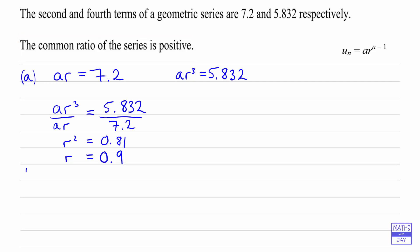And then part b, well we know that ar is 7.2, so in other words we know that 0.9 times a is 7.2. That tells us that a must be 7.2 divided by 0.9, so a is equal to 8. So we've done the first two parts.